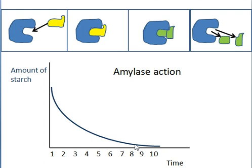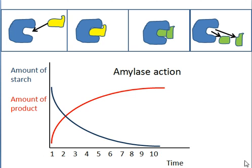You can show the converse with the amount of product. Initially, the rate of reaction is fast, and then as all the starch gets used up, there's very little left for the enzyme to do until the reaction finally completes.